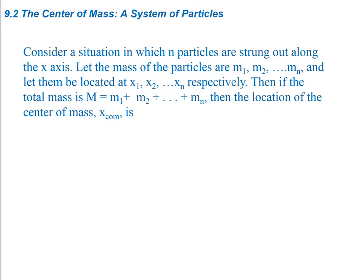So the center of mass of a system of particles — a group of particles, whether it's an object or just singular particles, each having their own mass. Let's consider a situation in which n particles are strung out along the x-axis. Let the mass of the particles be m1, m2, all the way through mn, and let them be located at positions x1, x2, etc. Then if the total mass is m1 plus m2 plus m3 all the way through mn, the location of the center of mass will be given as x_com.